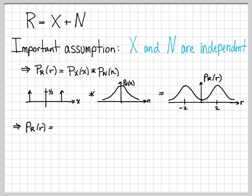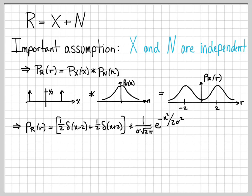Let's do the math. We plug in the probability density function for X — that's what we convolve with the PDF for N. This isn't hard because the convolution operator is distributive. Instead of convolving one thing with a sum, we write it as two separate convolutions summed together. So we get one-half times 1 over sigma square root of 2 pi, and we convolve delta of (x minus 2) with e to the minus n squared over 2 sigma squared.